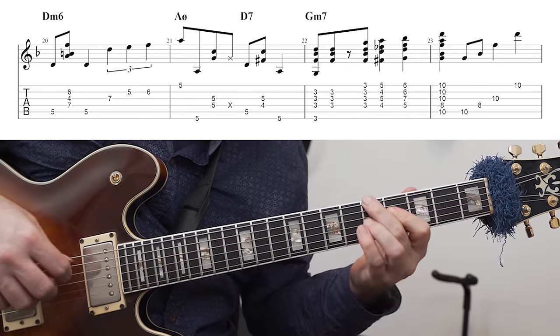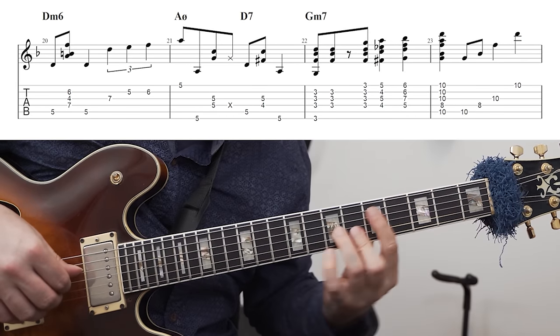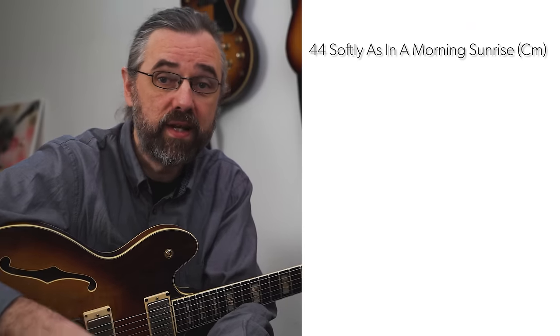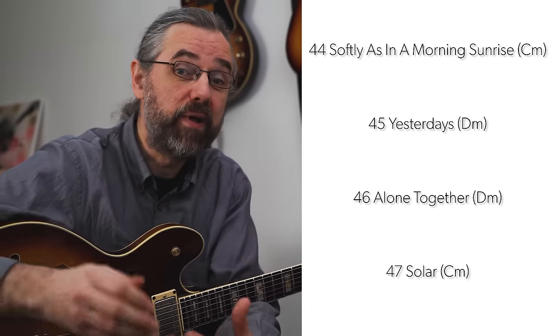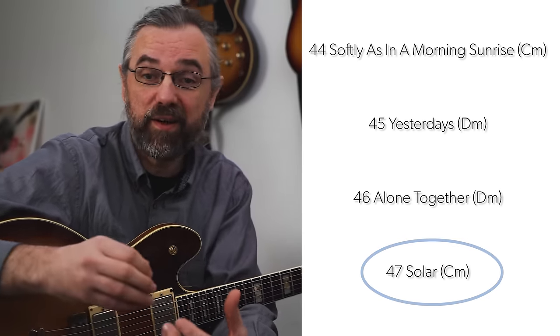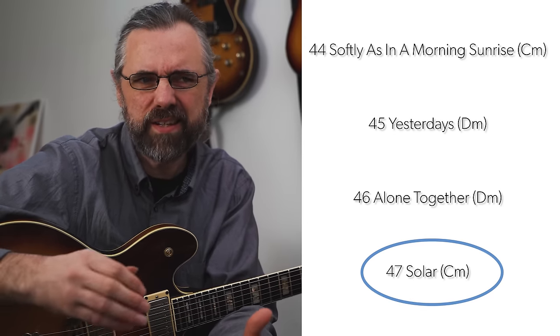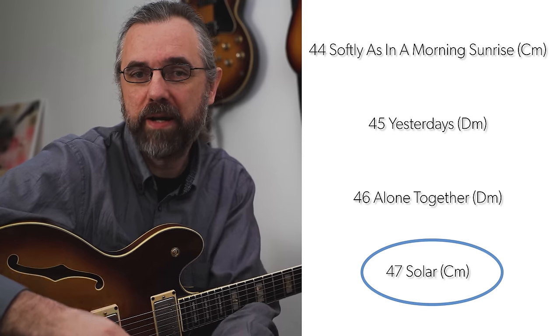Something a little bit overlooked when creating variation in a set is the difference between major key and minor key songs. You want to have some minor key songs in your repertoire, even though there aren't as many of them. Great and common examples include Softly as in a Morning Sunrise, Yesterdays, Alone Together, or Solar. Solar is in fact a take on a 12-bar minor blues.